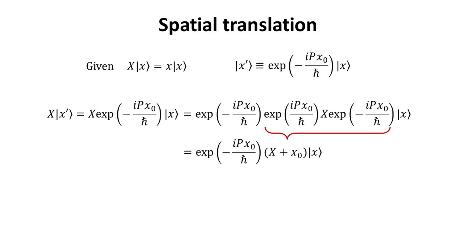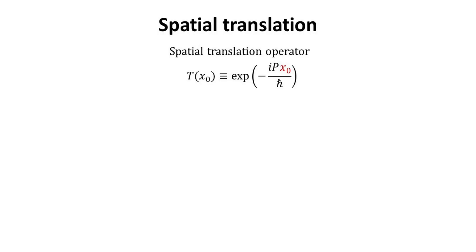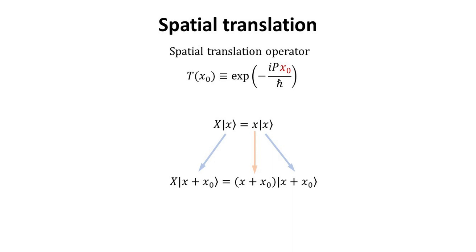Thus, the operator x is being unitarily transformed into x plus x_0. Alternatively, we can also say that x is being translated by an amount x_0. Acting on |x⟩, we can replace the operator x with its eigenvalue x. Finally, we recognize |x'⟩. Thus, we have established that |x'⟩ is also an eigenstate of the position operator with eigenvalue x plus x_0. The operator exp(−ip·x_0/ℏ) is actually the translation operator T(x_0), where its argument x_0 denotes the amount of translation. The translation operator transforms the eigenstate |x⟩ to the eigenstate |x + x_0⟩.